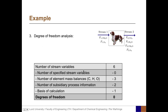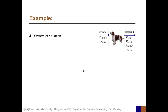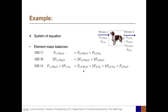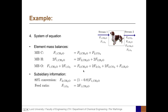Summarizing the degree of freedom analysis: the number of stream variables is six, there are no specified stream variables, we can form three independent element mass balances, we have two pieces of subsidiary process information, we can introduce one basis of calculation, and the degrees of freedom is zero. The system of equations contains six equations: the three element mass balances — one for C, one for H, and one for O — all in the form input equal output, where element fluxes are expressed in terms of component stream variables. The two subsidiary conditions specify the conversion of CH2O and the feed ratio of O2 to CH2O in stream 1, and the basis of calculation is F1_CH2O equals 100.